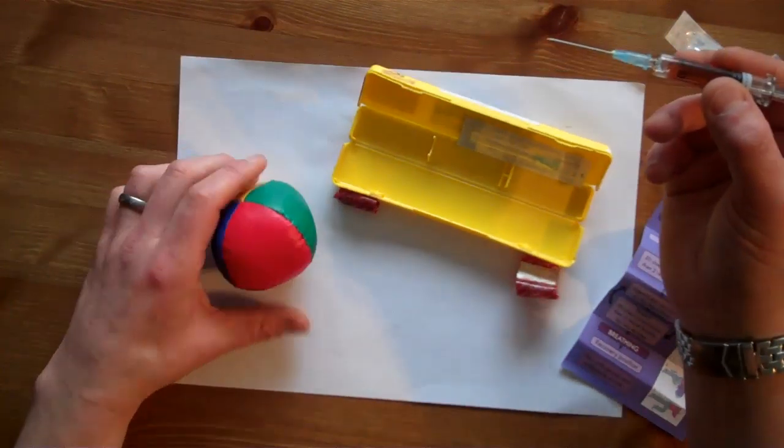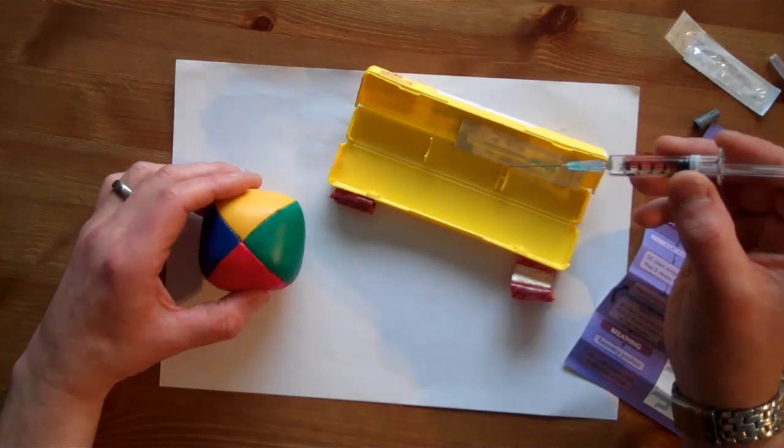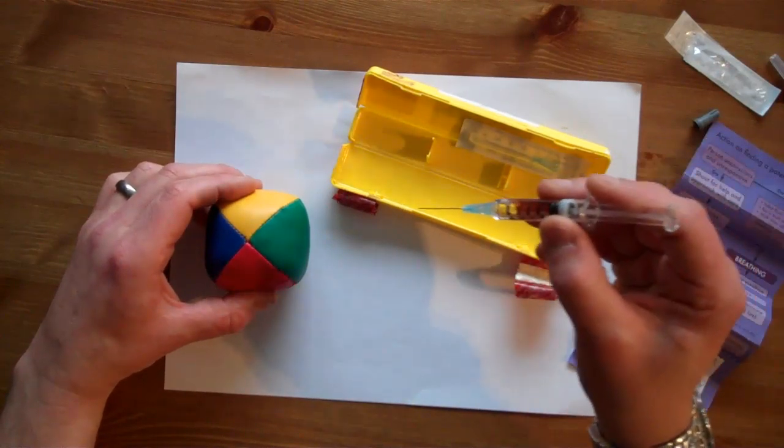If we were imagining this was the casualty's leg, then we would inject at a 90 degree angle to the surface of the skin, straight through.